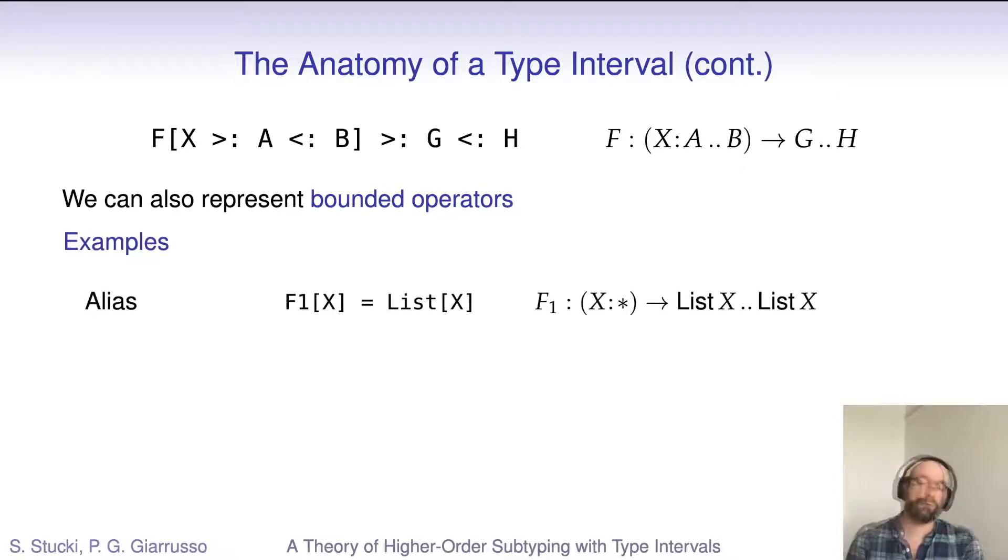Here are some examples. First, we can encode aliases of type operators in much the same way that we encoded aliases of proper types. For example, here we have an alias of the type constructor list. It takes a type parameter X and returns an element of the singleton kind that contains just lists of X. Often, we don't want to define aliases. We want to declare abstract type operators with certain bounds. For example, here the abstract type operator f2 of X is upper bounded by list of X, which means we can instantiate it with a subtype of list of X. For example, a linked list implementation or an array list implementation.